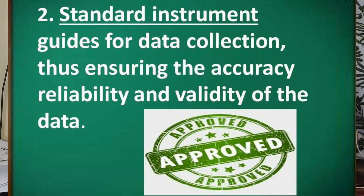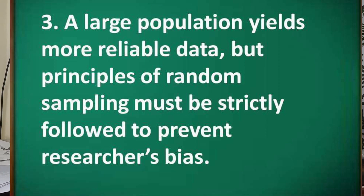A large population needs more reliable data, but the principle of random sampling must be strictly followed to prevent researcher bias. In quantitative research, we need random sampling to avoid bias. Random sampling means you select randomly — not based on your likes, not according to your topic or title. You choose participants or respondents not because you like them — you select them randomly.